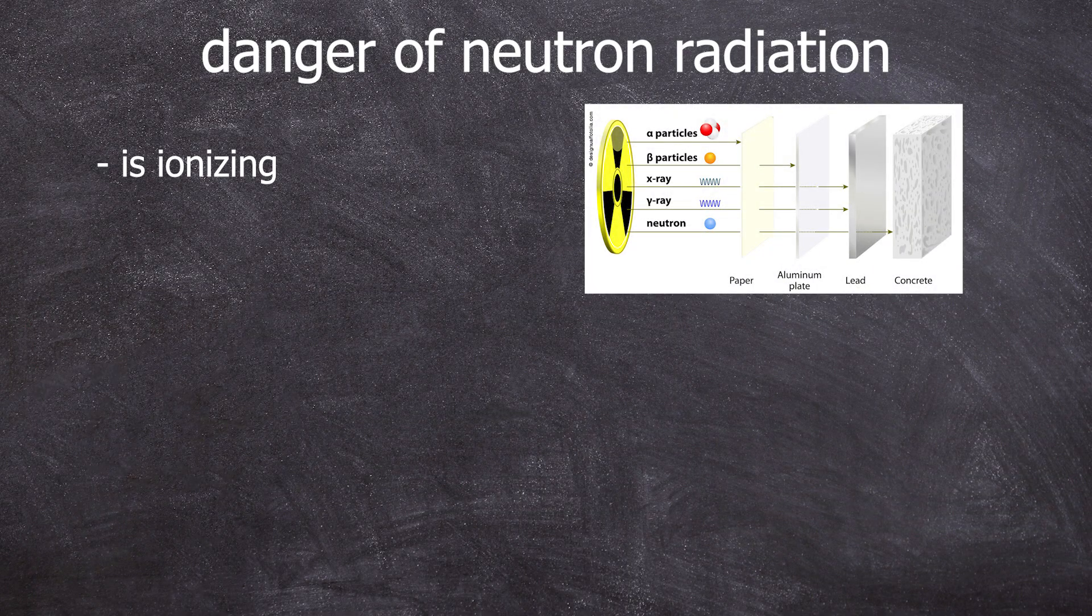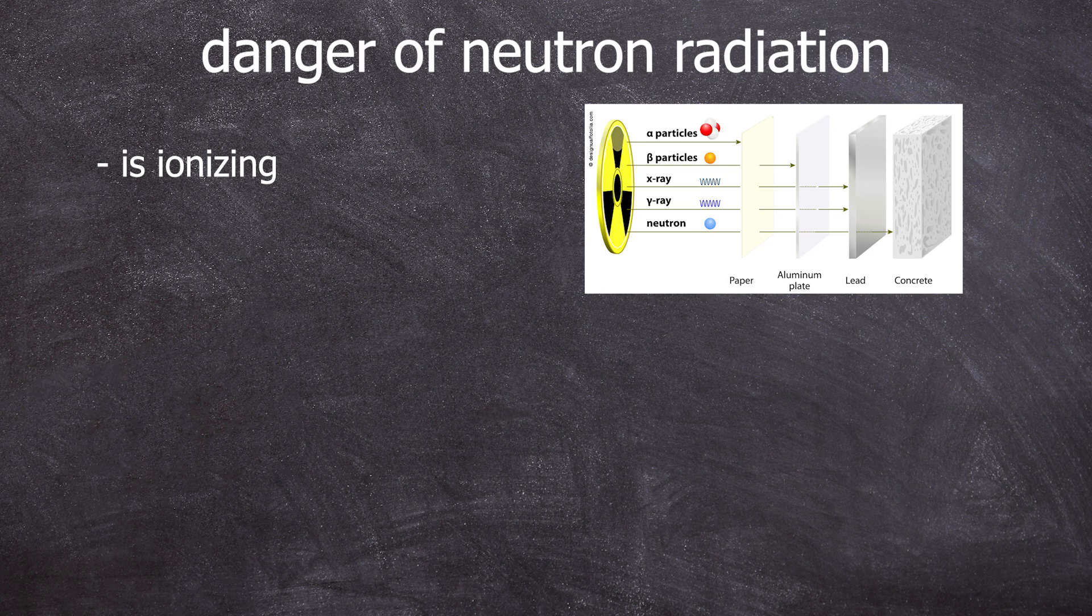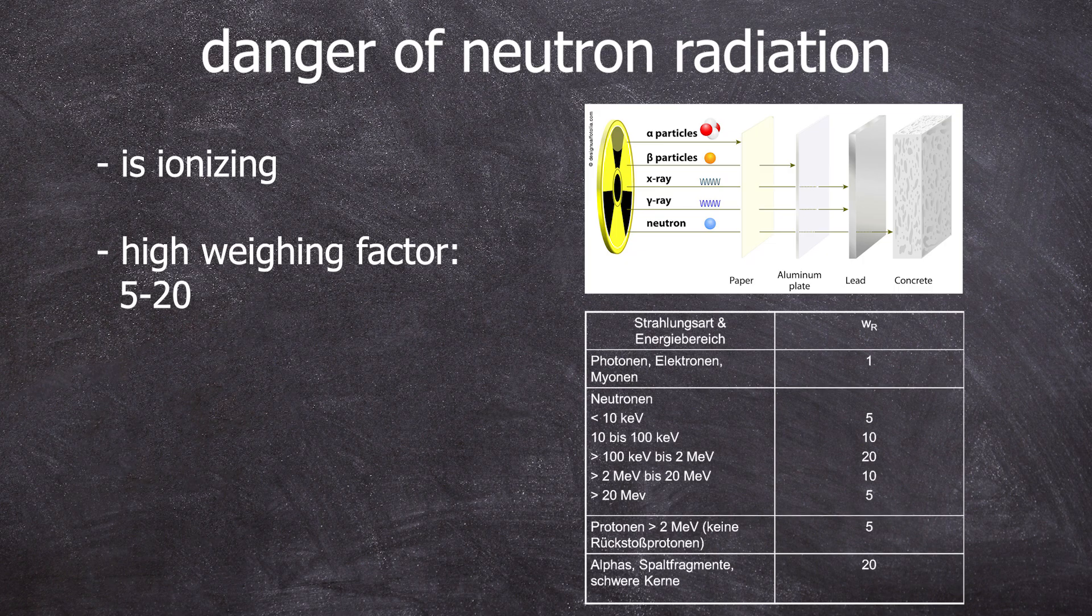Neutron radiation is dangerous for two reasons. First, like all radiations in nuclear chemistry, it's ionizing radiation, so you can damage genetic material. It has a radiation weighting factor five times higher compared to beta or gamma radiation. But even worse, it can make things radioactive.